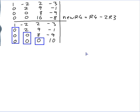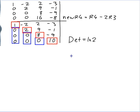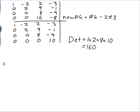Why do we want an upper triangular matrix? Because it's really easy to calculate the determinant — all you do is multiply the diagonal entries. So the determinant is 1 × 2 × 8 × 10 = 160. That's the determinant of this upper triangular matrix.